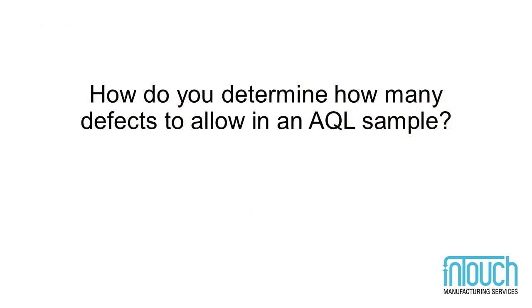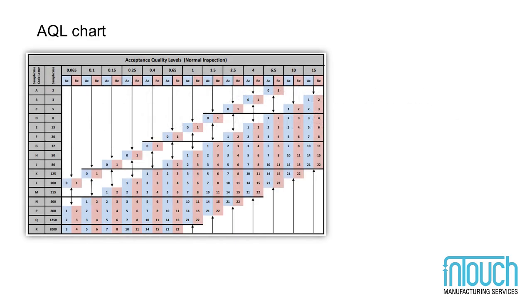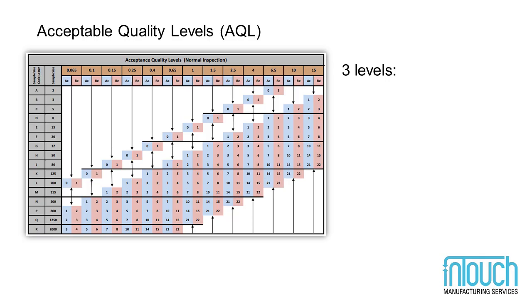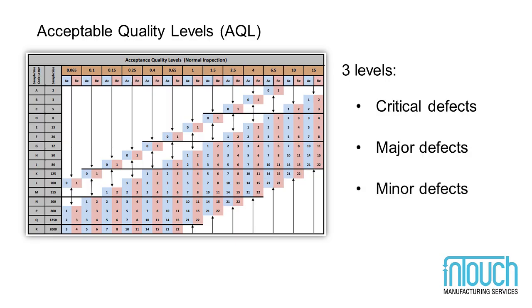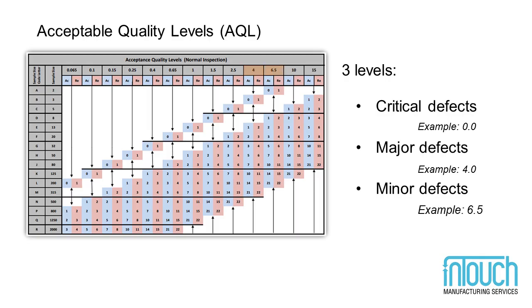The last step in using the AQL chart for inspection involves determining the AQL — the maximum number of defects allowed in the sample for inspection to pass. Product inspection generally uses three inspection levels: one for critical defects, one for major defects, and one for minor defects. Critical defects are typically those that pose a safety hazard to the consumer, and you'll probably want to use an AQL of 0 there. Major defects are those that affect the functionality of the product or might lead to returns from customers — you might use an AQL of 4.0. Minor defects typically don't affect product function and aren't likely to result in customer returns; you might use a more lenient AQL of 6.5.